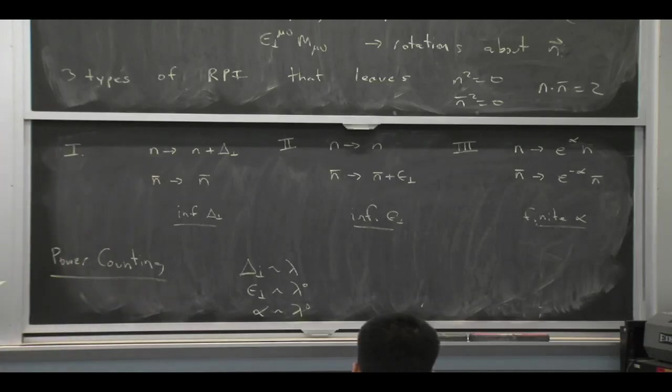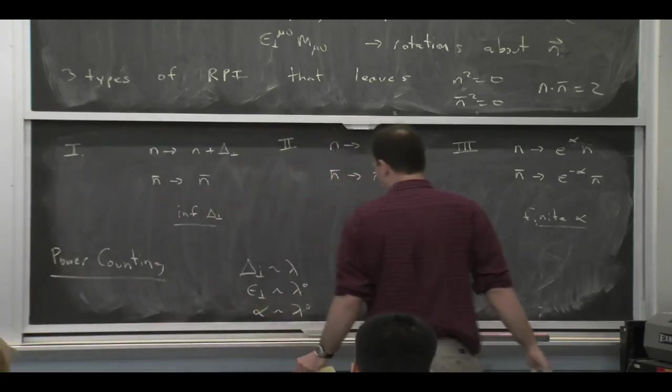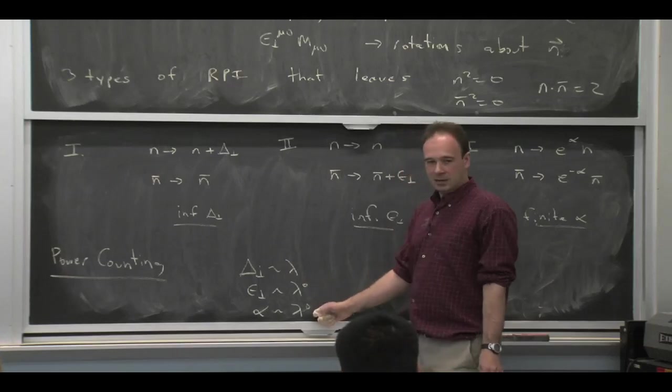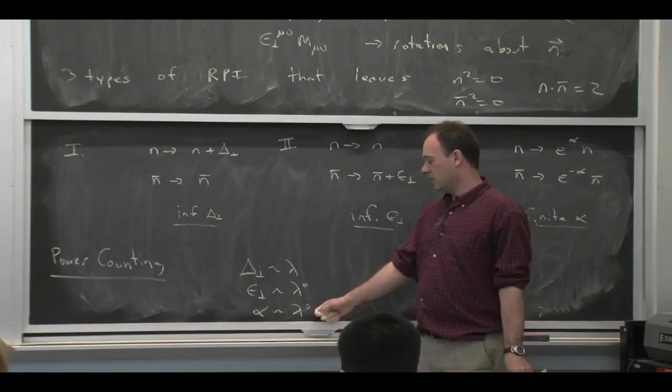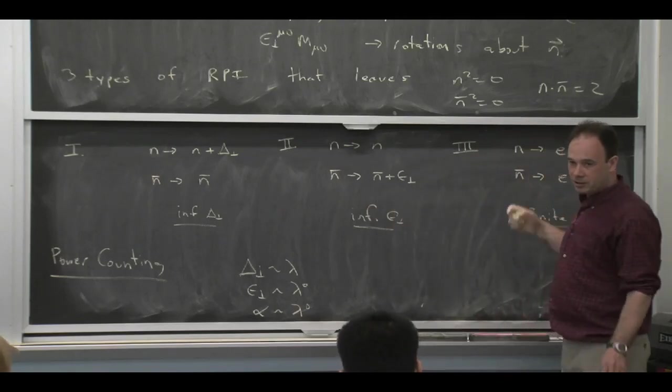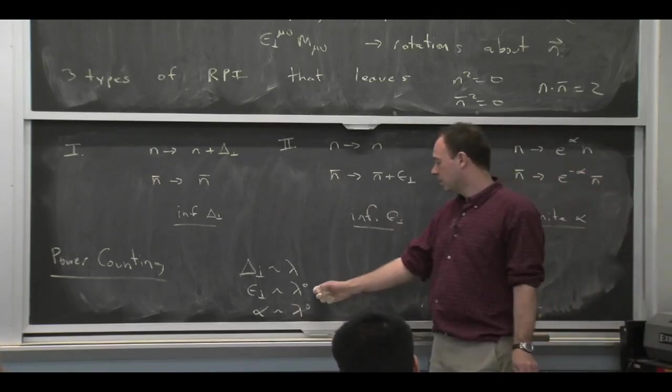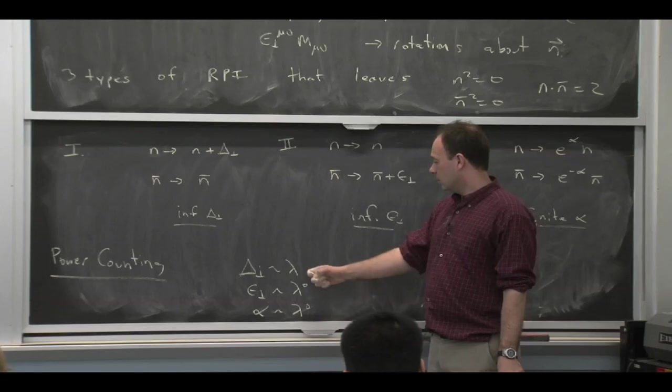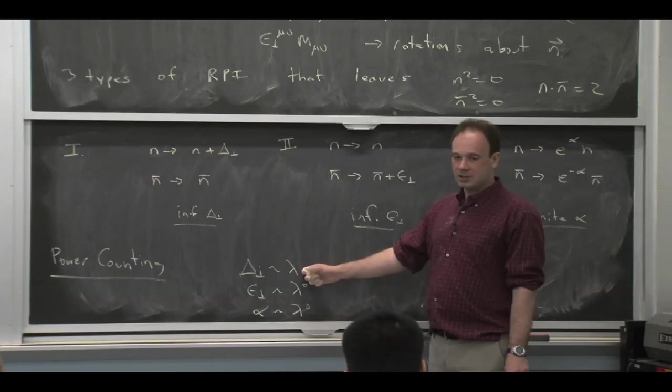And the right power counting for these guys is as follows. So this means I can make arbitrarily large transformations in a power counting sense of type two and type three. There's no constraint. That's what this means. So maybe that's easier to swallow. This one, there is a constraint.